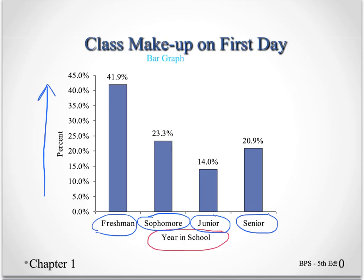With the bar graph, you do not have to represent 100% of your data. We could have done a bar graph for just the freshmen and sophomores, looking at the class makeup from the lower classmen — as opposed to the pie chart, which does need to have 100% of the data in it.